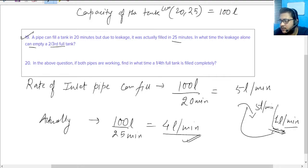If 1 liter per minute is the rate of the outlet, the question is asking in what time the leakage alone can empty a two-thirds full tank. So that will be two-thirds by 100 minutes.